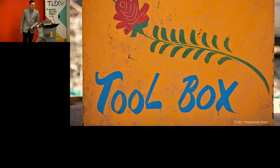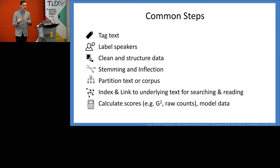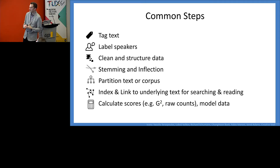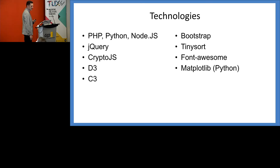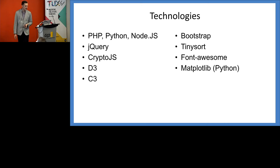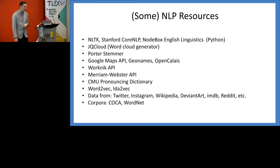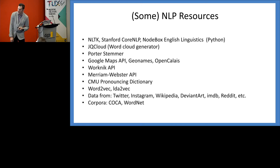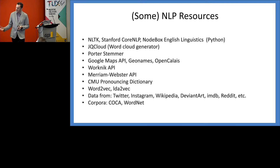So how do we do this kind of work? We use a bunch of different technologies on a regular basis: tagging text, sometimes labeling who's speaking, cleaning and structuring the data, indexing and linking it, and calculating scores about the terms. We use several different open source technologies and contribute back to some of those projects. We use many different NLP resources — everything from corpora to word embeddings like Word2Vec, outside data sources used as reference, including COCA and WordNet. If you're interested in using any of these things, feel free to get in touch.